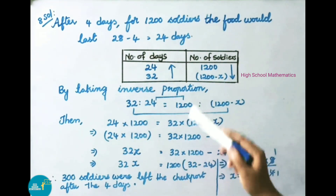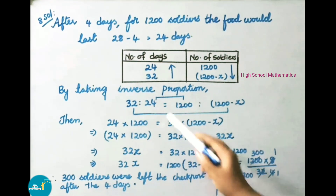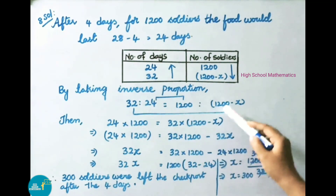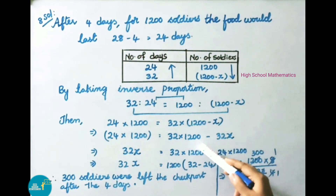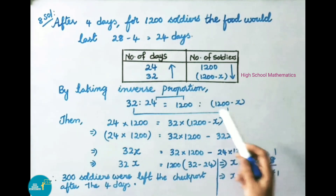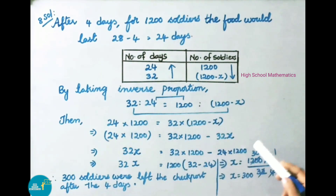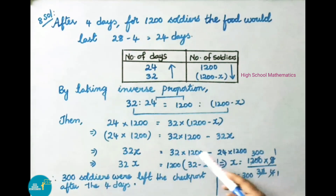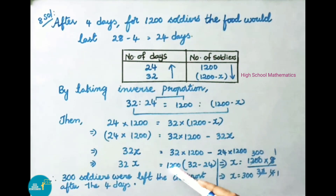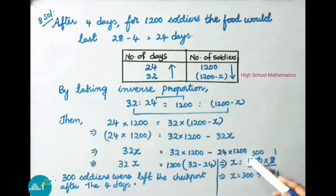We know product of means is equal to product of extremes. Then 24 into 1,200 is equal to 32 into (1,200 minus X). That implies 24 into 1,200 is equal to 32 into 1,200 minus 32X. On transposing, the minus value becomes plus and the plus value becomes minus. So, 32X is equal to 32 into 1,200 minus 24 into 1,200. That implies 32X is equal to 1,200 into (32 minus 24), since 1,200 is common in both terms.